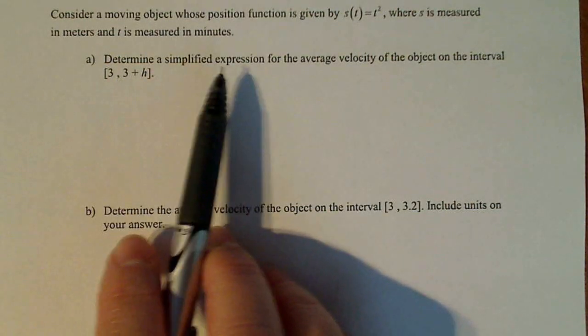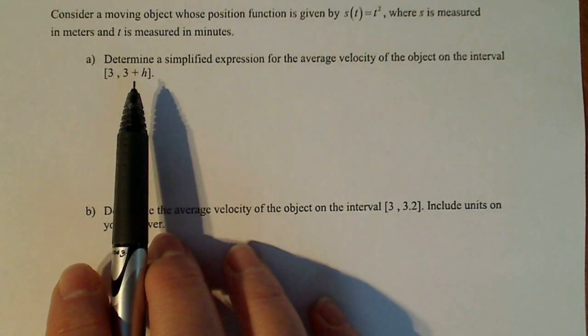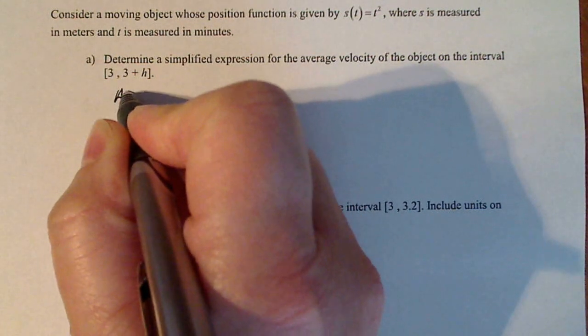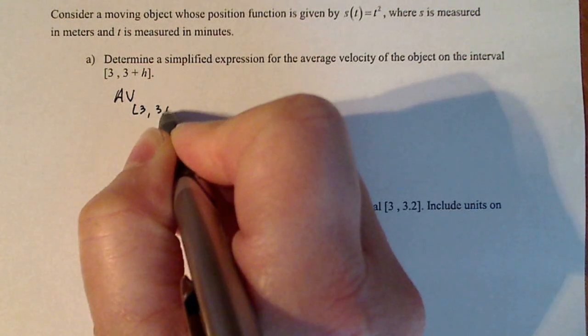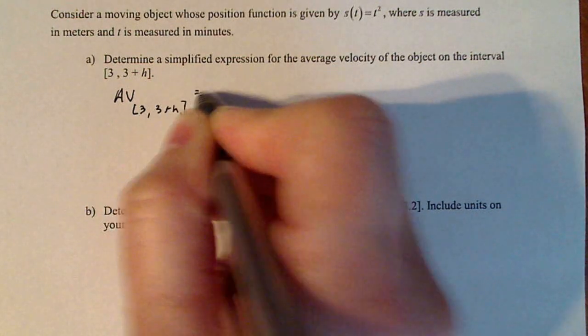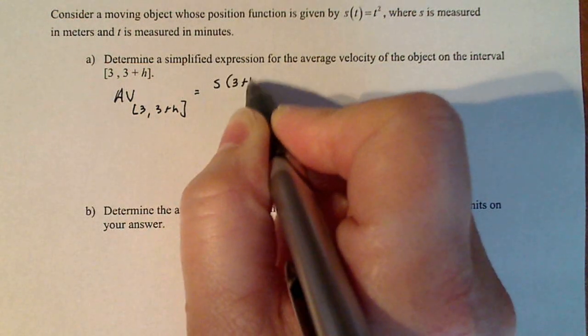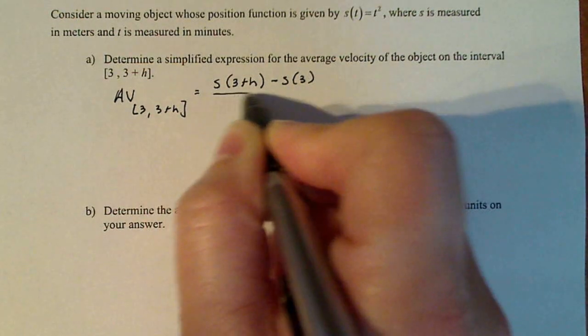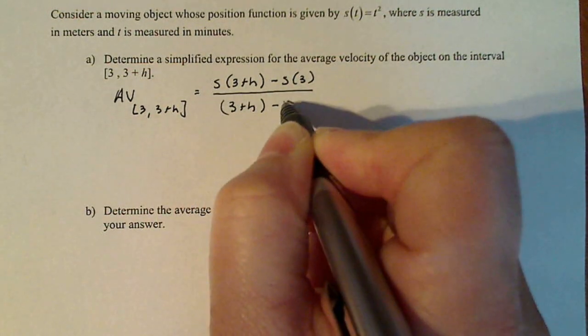Now we want to determine a simplified expression for the average velocity of the object on this interval. So average velocity, don't forget to label things, over the interval [3, 3+h] is going to equal s(3+h) - s(3) divided by (3+h) minus 3.